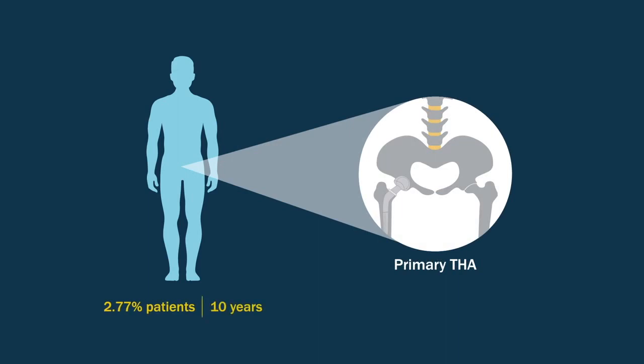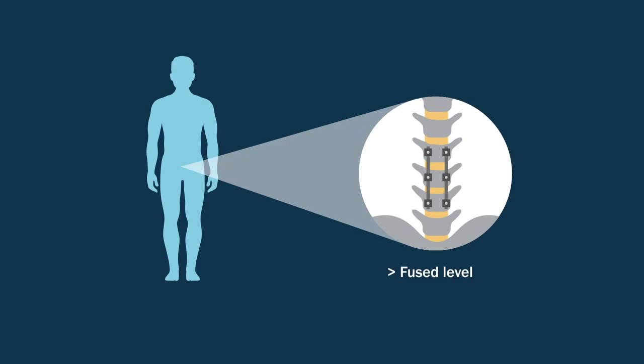Within 10 years, the rate of having a hip replacement went up with the number of fused levels, with a peak of 4.63% of patients who had more than 7 spinal levels fused.